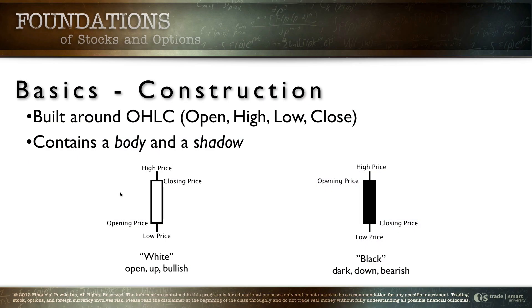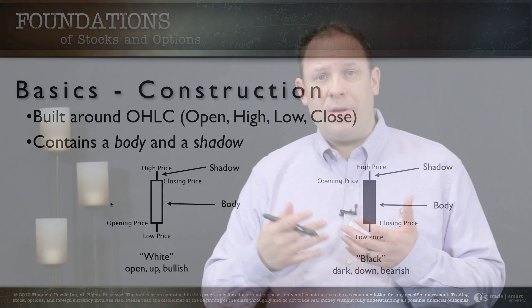As we look at these candlesticks you're going to notice that it contains two key components. We've got the candle shadow and we've got the candle body. The upper and the lower portion that indicates the high and the low for the day, that is going to be the candle shadow and then the main portion that's going to either be black or white we call that the candle body or the real body of the candle. And so every candlestick is going to have these components the open, the high, the low and the close and it's going to be composed of a candle shadow and the candle body. We have upper shadows, we have lower shadows but we just have one candle body.